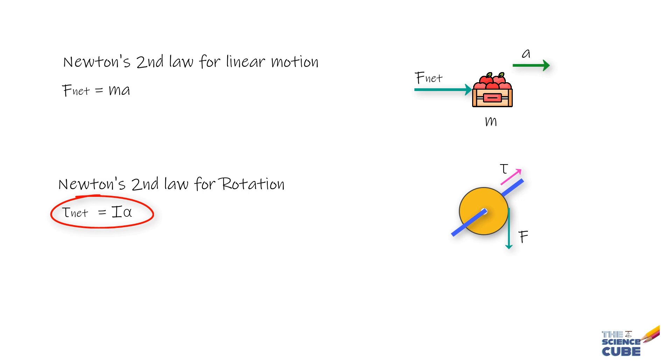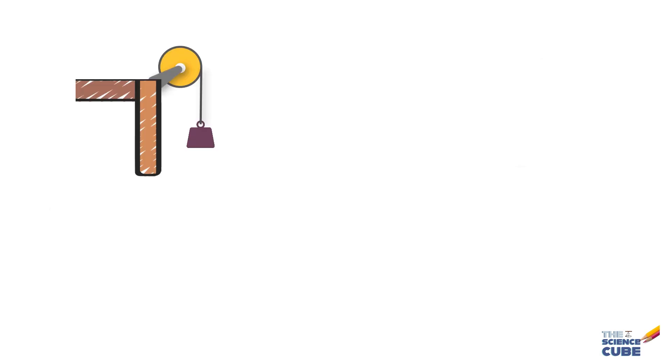What we have here is a uniform disc that has a mass m of 2.5 kilograms and radius r is 20 centimeters, and it is mounted on a fixed horizontal axle.